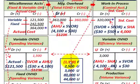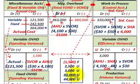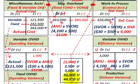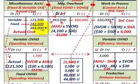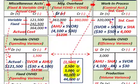Netting all the credits and debits, the total net variance is $44,000 unfavorable. This is confirmed by comparing our actual cost of $364,000 to our standard cost of $320,000 — a $44,000 difference, which is exactly what we calculated across our different T-accounts.